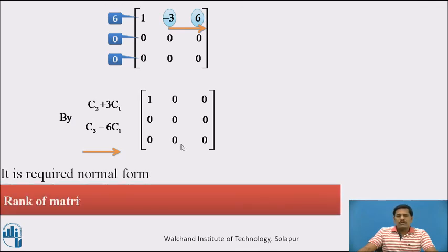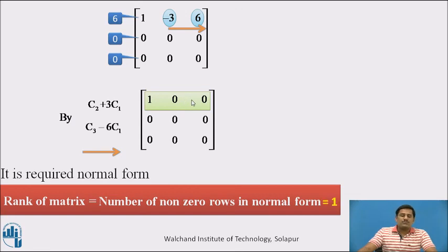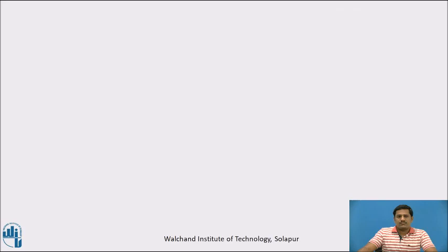The rank of the matrix is the number of nonzero rows. There is only one nonzero row present, therefore the rank of the matrix is 1.